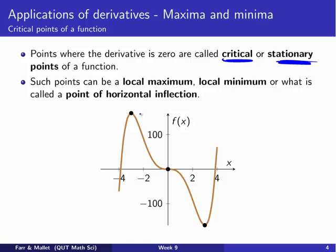These kinds of points where the derivative is zero can be local minima, like this one down here. They can be local maxima, like this one. Or they can be what we call points of horizontal inflection, like this one. The derivative there would be zero — zero slope of the curve — but it's neither a maxima nor a minimum. So that's a point of horizontal inflection.